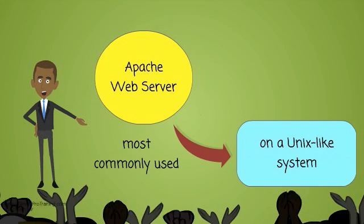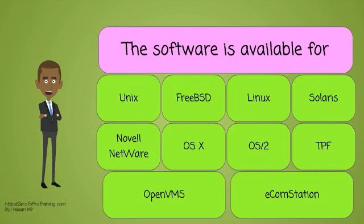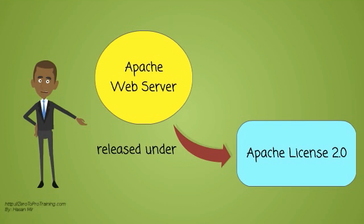It is most commonly used on a Unix-like system. The software is available for a wide variety of operating systems, including Unix, FreeBSD, Linux, Solaris, Novell Netware, OSX, Microsoft Windows, OS2, TPF, OpenVMS, and Ecom Station. It is released under the Apache License 2.